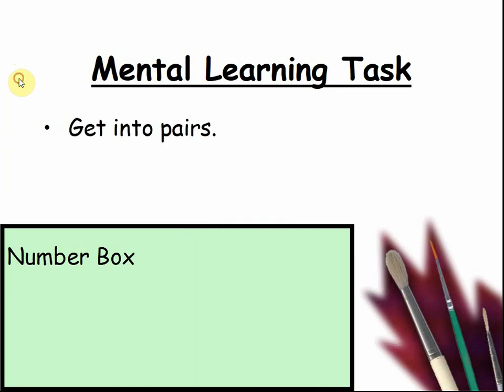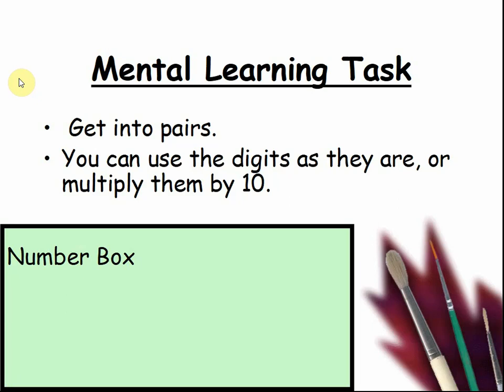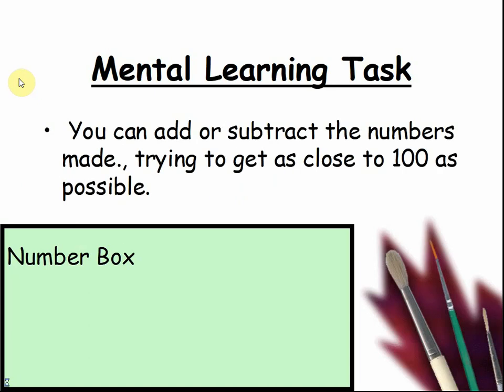Get into pairs. You can use the digits as they are or multiply them by 10. So you could, for example, have a 2 or a 20. A 4 could become a 40. You can add or subtract the numbers made, trying to get as close to 100 as possible.